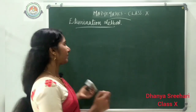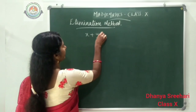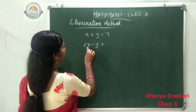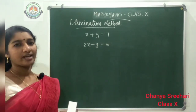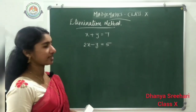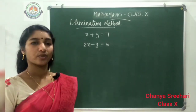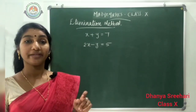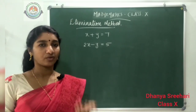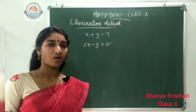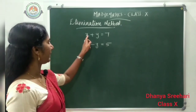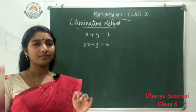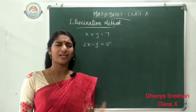What is meant by elimination method? A question is given: x plus y is equal to 7, and 2x minus y is equal to 5. We have two equations. One is x plus y equals 7 and the other is 2x minus y equals 5. By eliminating one variable, we need to solve for x and y. We have two variables x and y, and two equations. We can do some operations on these equations to eliminate one variable.